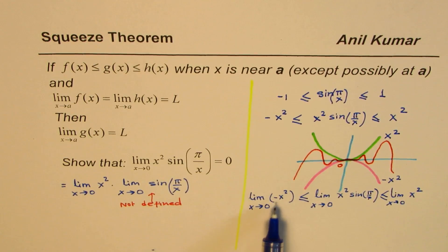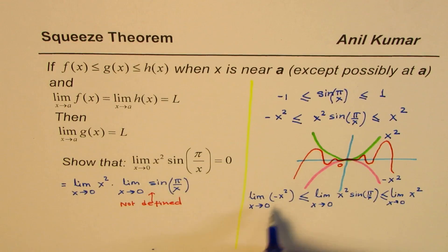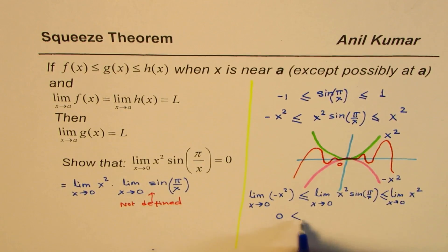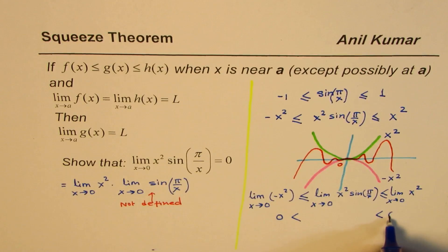Now, as you can see from here, if I write 0 here, when we approach 0, this limit is 0, and that limit is also 0.